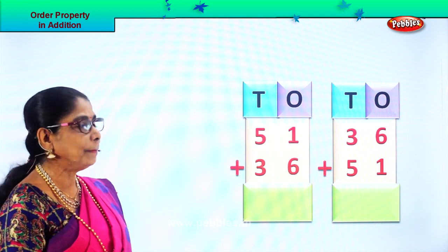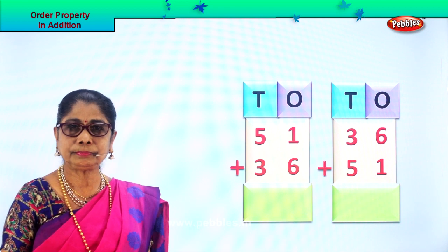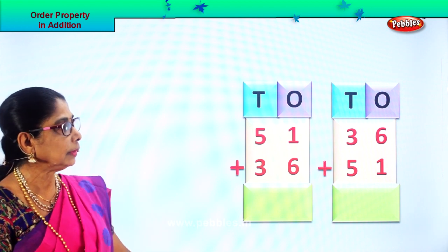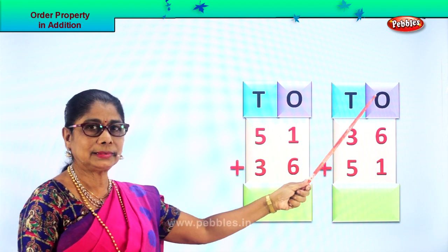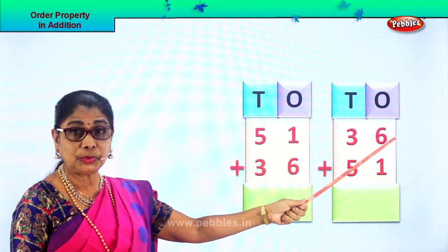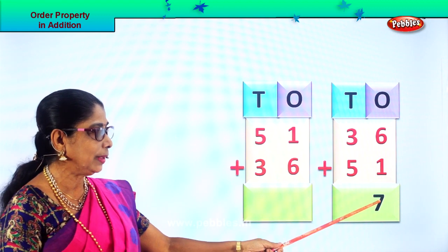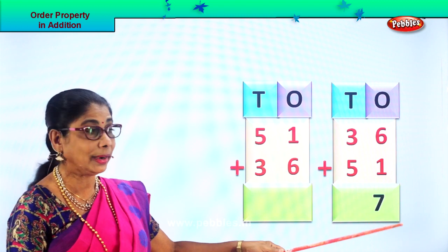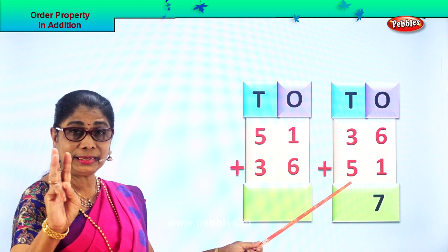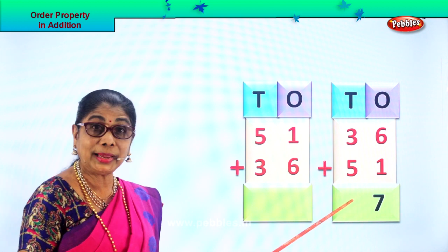Look at the numbers. You have 36 plus 51 and here you have 51 plus 36. Let's add all the ones place. In the ones place you have 6 ones and 1 one. 6 plus 1 is 7 ones. So we write down 7 ones. Then 3 tens plus 5 tens — 5 in the mind, take 3 on your fingers. After 5: 6, 7, 8. So you get 8 tens.